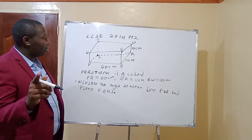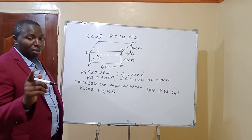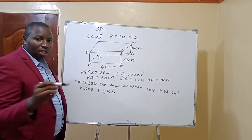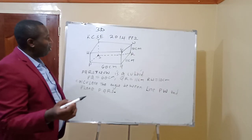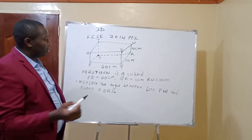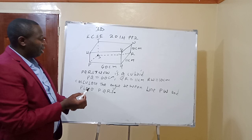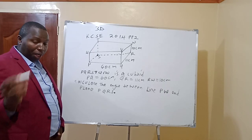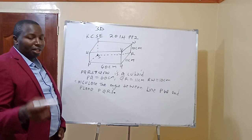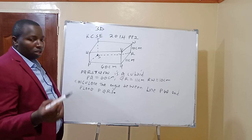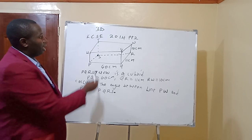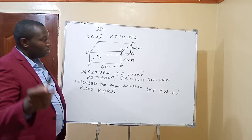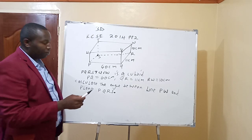So on today's lesson, we are going to learn about three-dimensional geometry — that's 3D — which is a topic in 4.4. We are going to learn about the angle between a line and a plane. This is from the KCC 2014 exam, paper two.